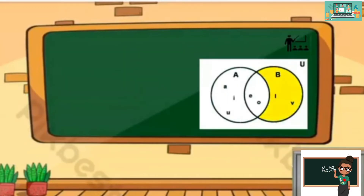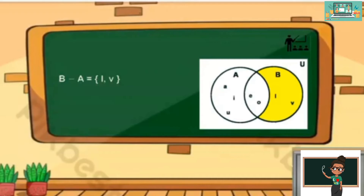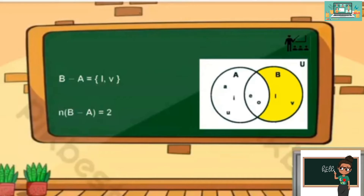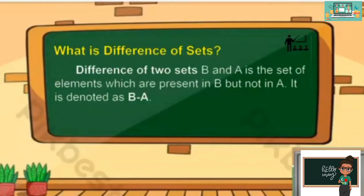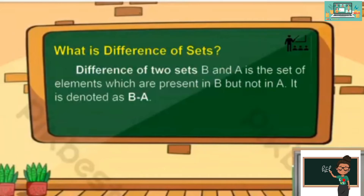How about the shaded region? That is B minus A, wherein the elements are only L and B. The cardinality of B minus A is equal to 2. The difference of two sets B and A is the set of elements which are present in B but not in A. It is denoted as B minus A.